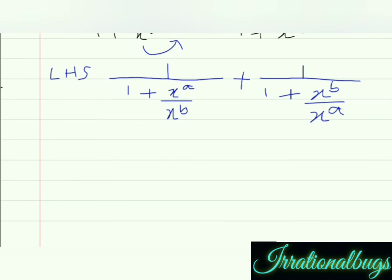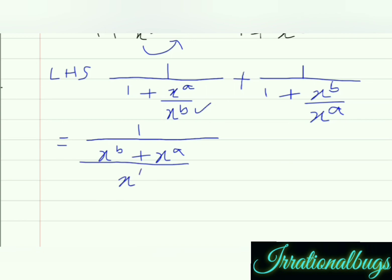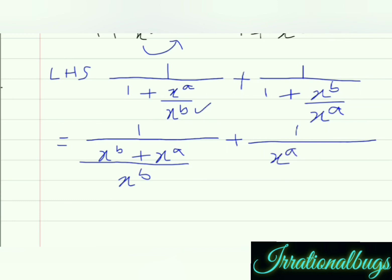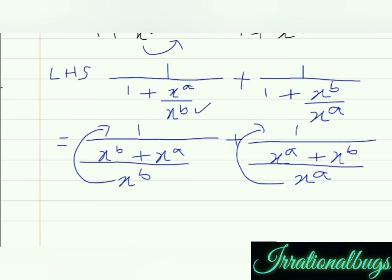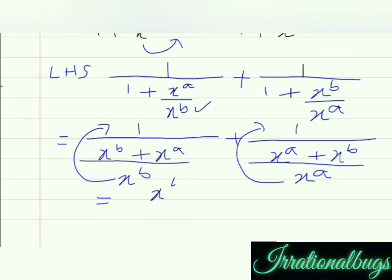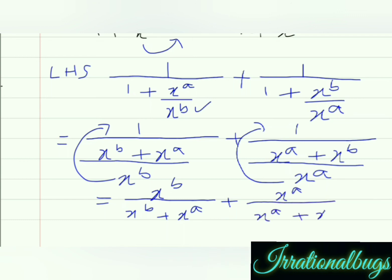Now, अगर denominator के LCM लें तो x raised to the power b आएगा. So we can write: x raised to the power b plus x raised to the power a upon x raised to the power b. यह x raised to the power b numerator में shift कर सकते हैं. Plus, again denominator 1 और x raised to the power a का LCM ले रहे हैं तो x raised to the power a आ रहे हैं. So, x raised to the power a plus x raised to the power b upon x raised to the power a. Denominators xb and xa ये numerator में ऊपर आ जाएंगे.